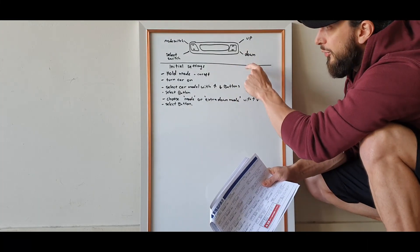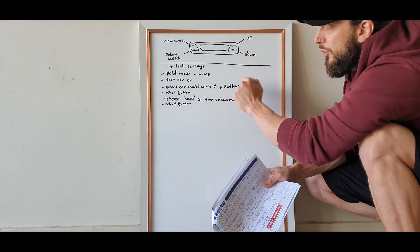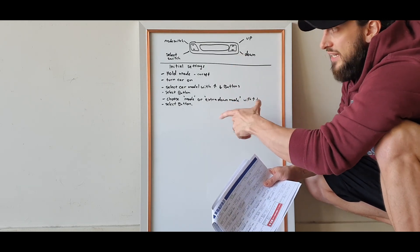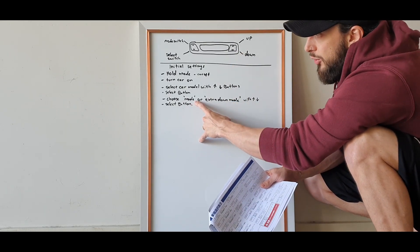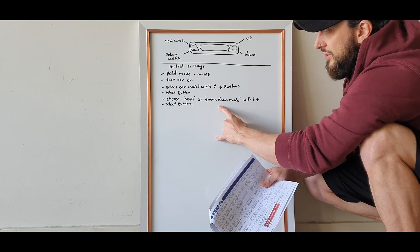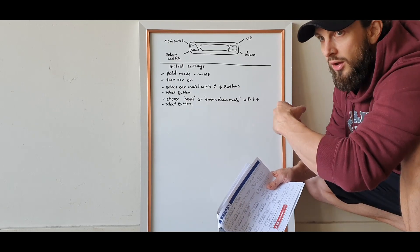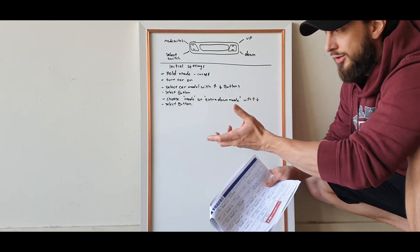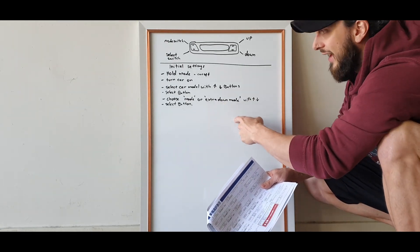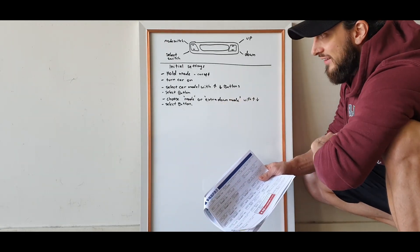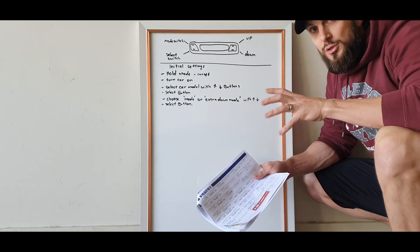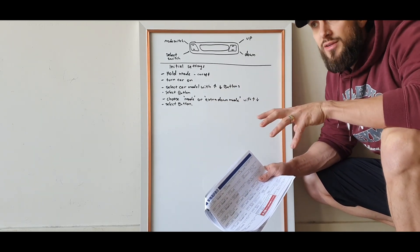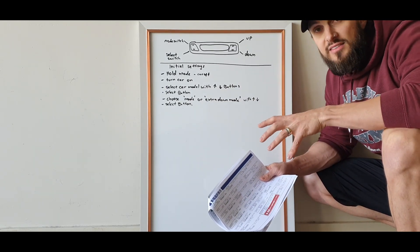It'll put you into the section where you can select the model of your car. You'll just scroll through until you find your model and select that. Then it will take you to the next screen which will either be mode or extra down mode. I know all of you are going to pick extra down mode, so just go to that and hit select. Once you've done that, the initial setup is done.